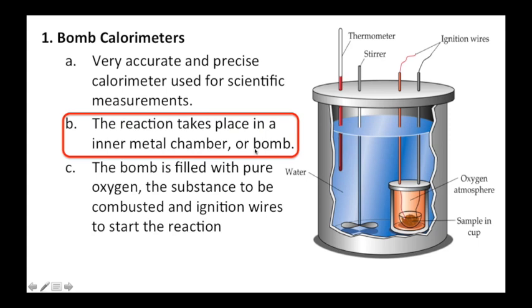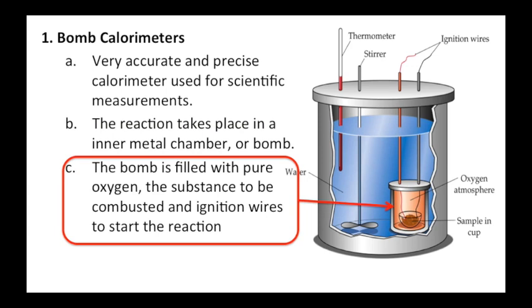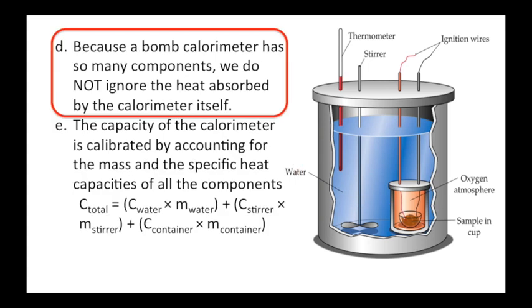The bomb is filled with pure oxygen, the substance we want to burn, and there's ignition wires in there to start the reaction. Because a bomb calorimeter has so many components, we do not ignore the heat absorbed by the calorimeter itself.